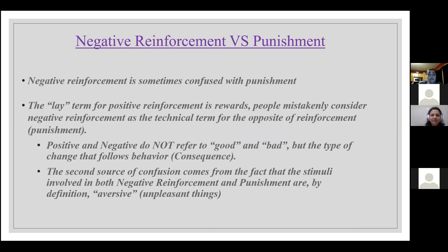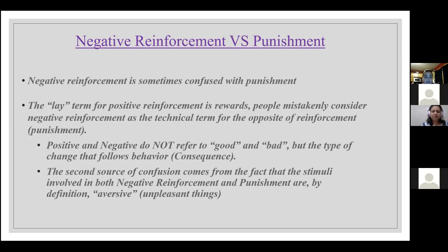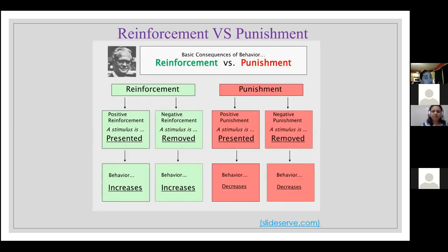Negative reinforcement is sometimes confused with punishment. The lay term for positive reinforcement is 'rewards,' and people mistakenly consider negative reinforcement as the technical term for the opposite of reinforcement, which is punishment. Positive and negative do not refer to good or bad, but the type of stimulus change that follows the behavior — the consequence. A second source of confusion: the stimuli involved in both negative reinforcement and punishment are, by definition, aversive — unpleasant things. I found a visual that breaks this up nicely, and I'll put it on Theory as a study tool.